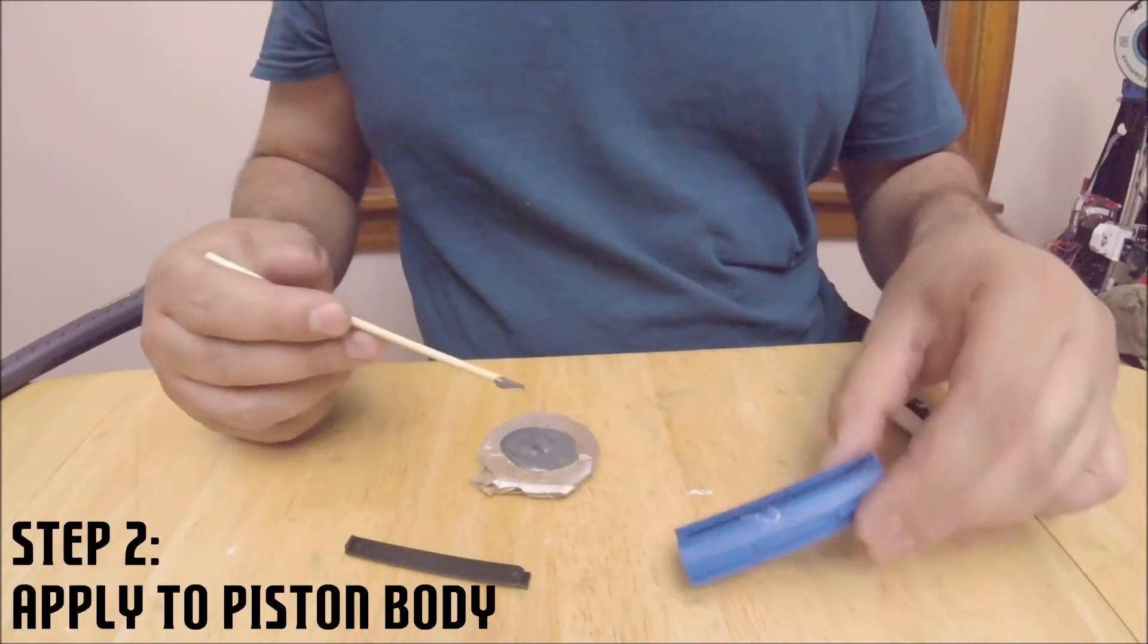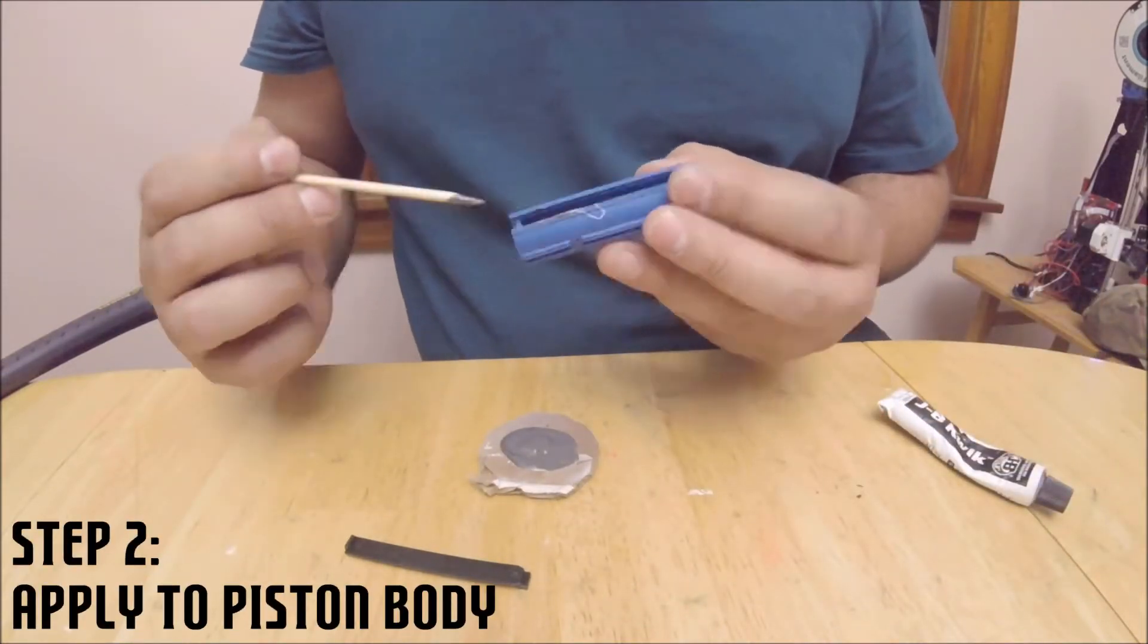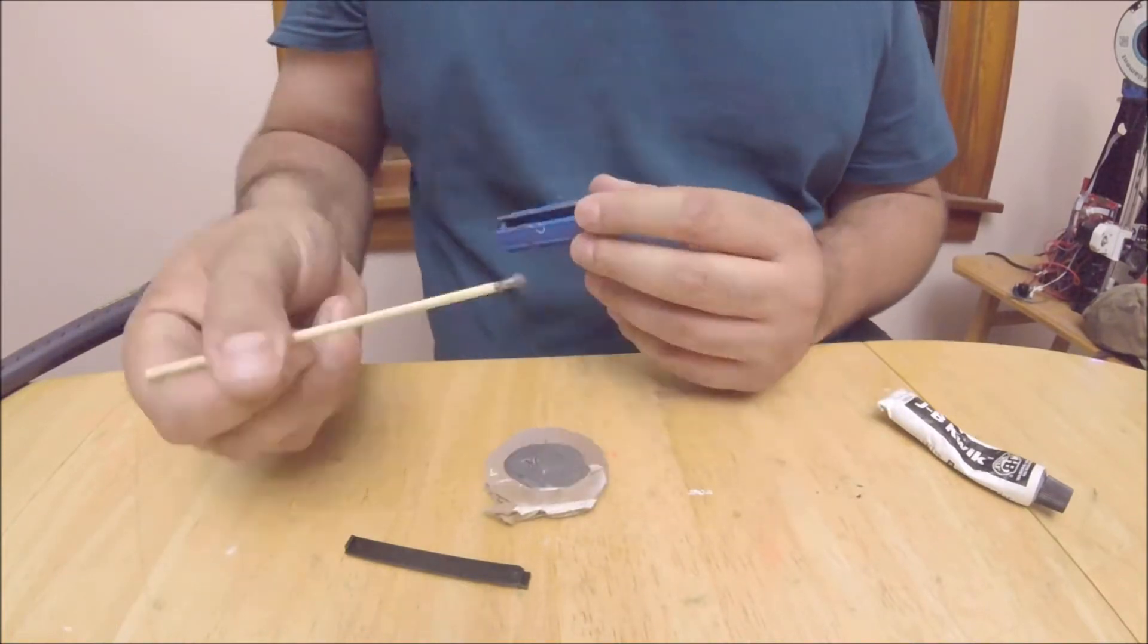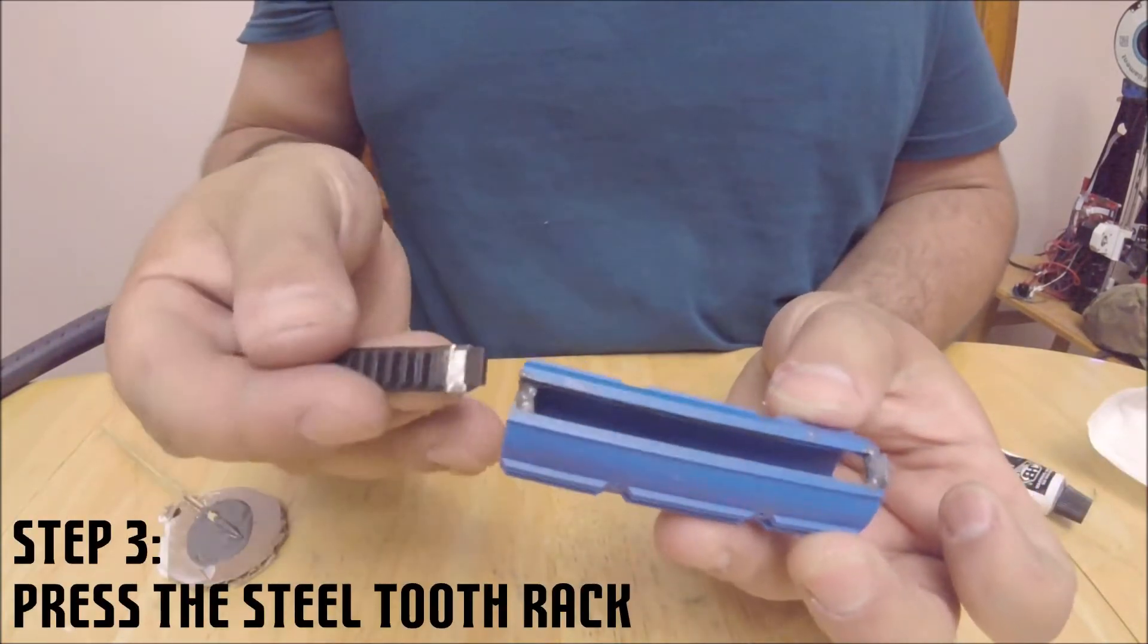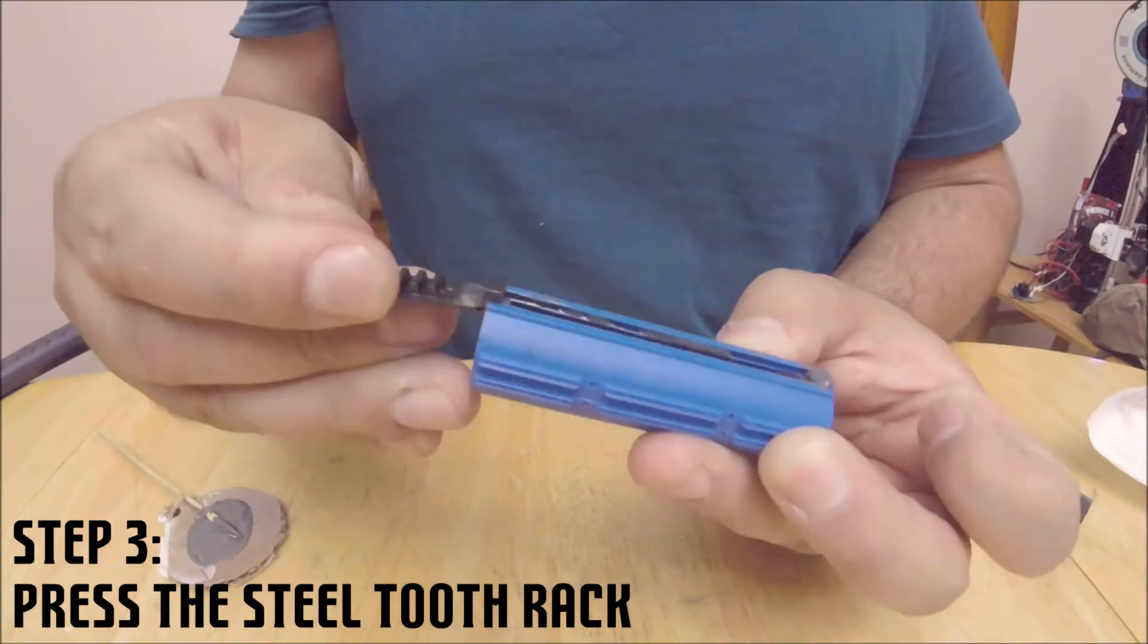Next we apply the epoxy to the piston body on the tracks, the front and the back. Next we press the steel tooth rack into the body until it is flush on the front.